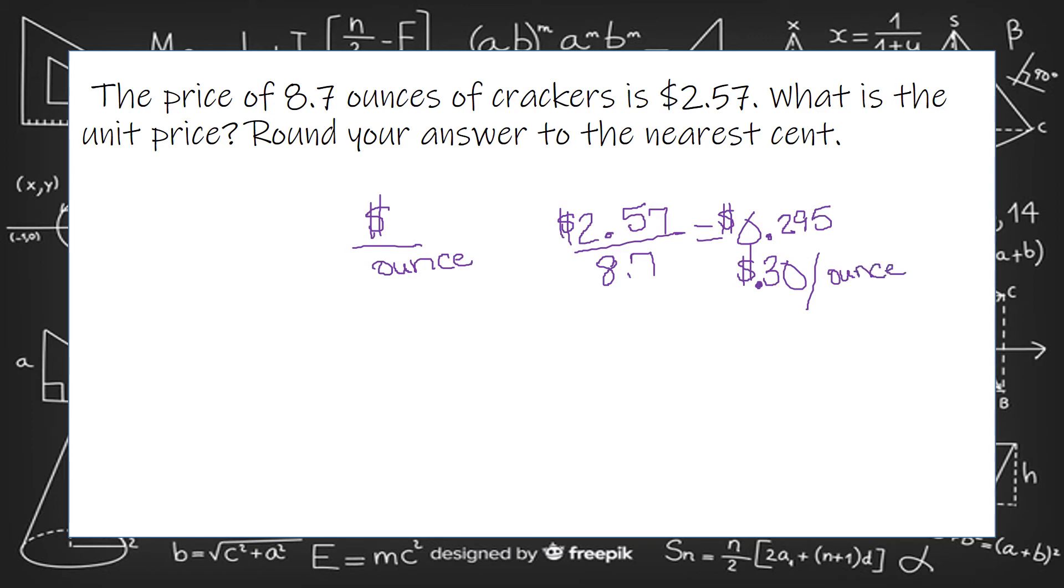And you get 0.295—yeah, 295. And that's money, so it would round up to 30 cents per ounce because you simplified it down to 1.